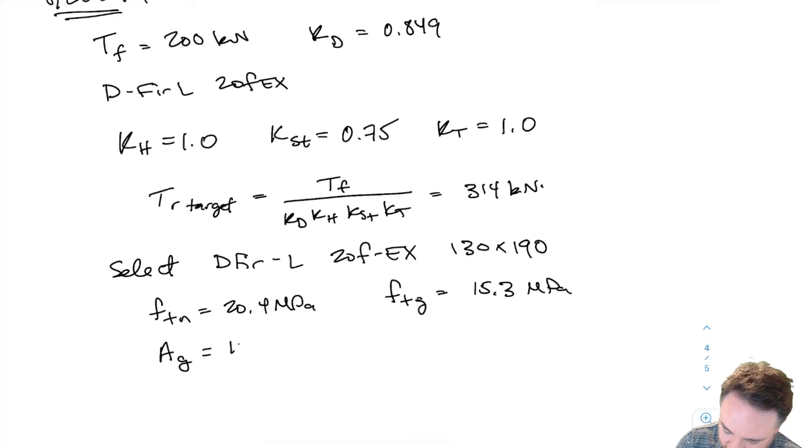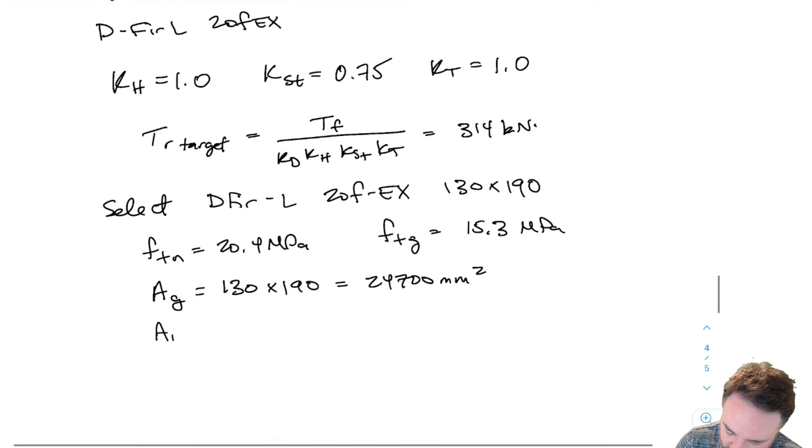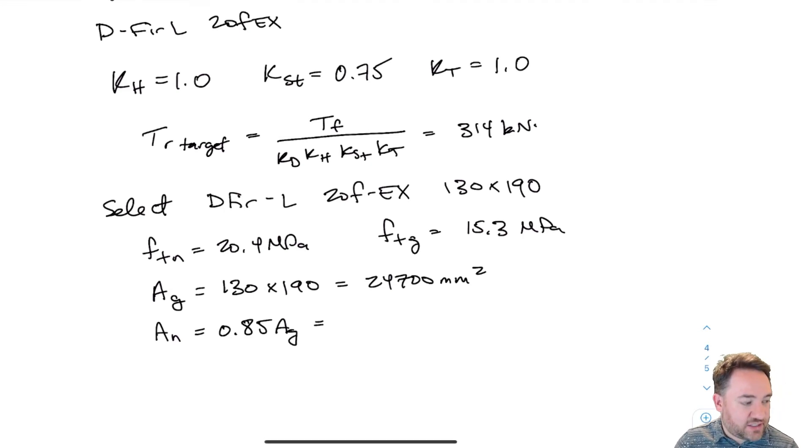FTN was 20.4 MPa and FTG was 15.3 MPa. My gross area is 130 times 190, which equals 24,700 millimeters squared. My net area, which we're assuming to be 85 percent of the gross, is going to be 20,995 millimeters squared.